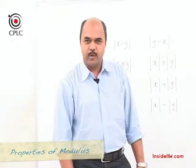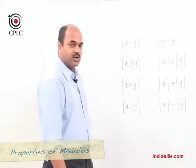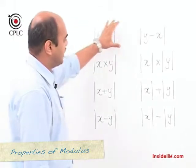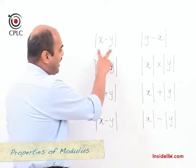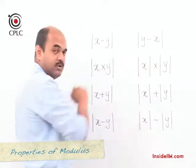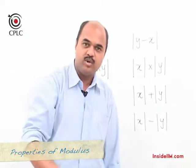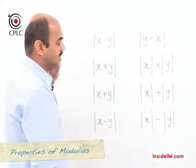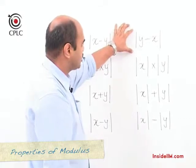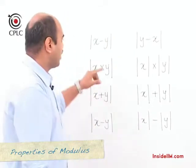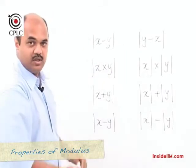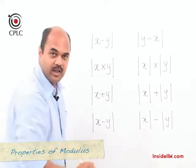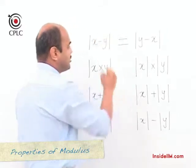Let's look at a few properties of modulus. We have expressions involving mods, and we need to connect the left-hand side and right-hand side with a relation — equal to, greater than, less than, and so on. When we look at mod of (x minus y) versus mod of (y minus x), using values you will notice that whatever the values of x and y, these two are always equal.